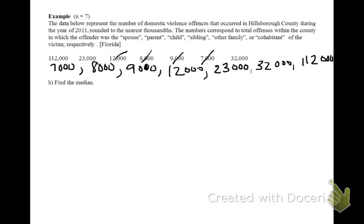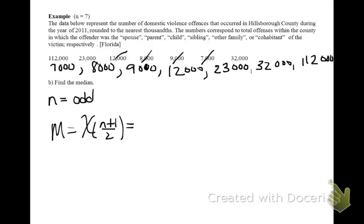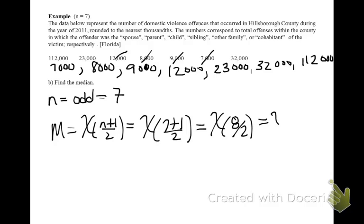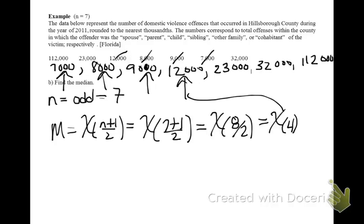For the exact same setting, we're now going to find the median. The first step is to order your observations from smallest to largest. The next thing is to pick which of the two formulas to use. Here our sample size 7 is odd, so the formula for the median says x parentheses n plus 1 over 2. n is 7, so we plug that in: 7 plus 1 is 8, and 8 divided by 2 is 4. This says go to your fourth ordered observation — that's x parentheses 4. So our median here is 12,000.